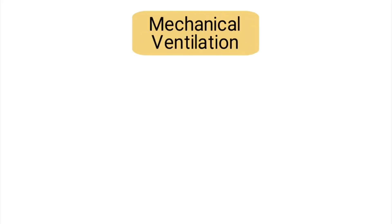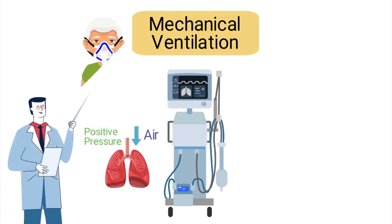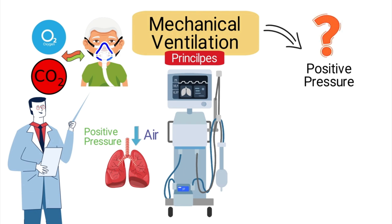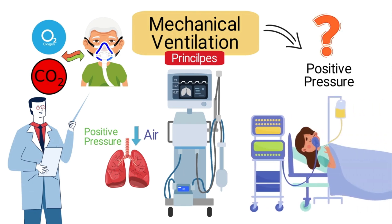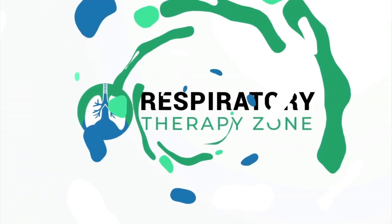Mechanical ventilation is the process of using a machine to move air into the lungs with positive pressure. This is necessary when a patient is unable to adequately exchange oxygen and carbon dioxide. The principles of mechanical ventilation determine how the machine is able to provide positive pressure and how it can be used to meet the specific needs of the patient — and that is the topic of this video.